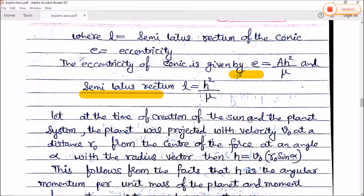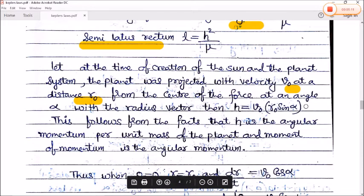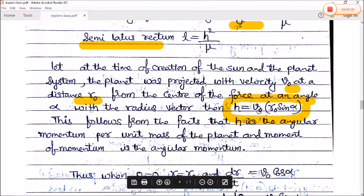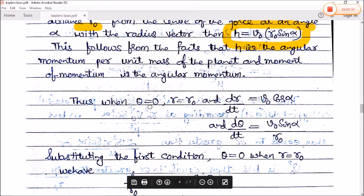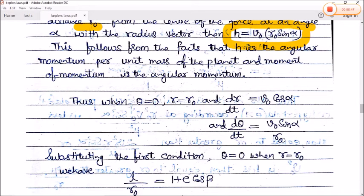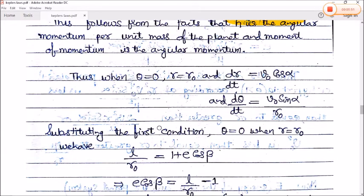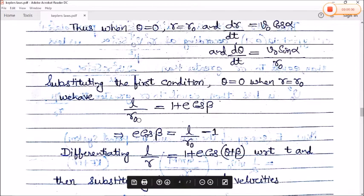At the time of creation, suppose the planet was projected with velocity v₀ at a distance r₀ from the center of force at an angle α with the radius vector. Then h = v₀·r₀·sinα, since h is angular momentum per unit mass. When θ = 0, r = r₀, giving: l/r₀ = 1 + e·cosβ, so e·cosβ = l/r₀ − 1.